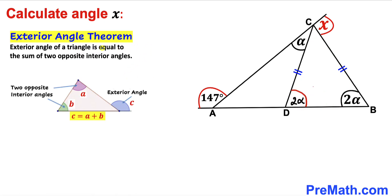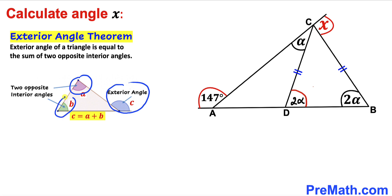Let's recall the exterior angle theorem. The exterior angle of a triangle is equal to the sum of the two opposite interior angles, as you can see in this diagram. Here our exterior angle is c and these are our two opposite interior angles, such that c equals a plus b.